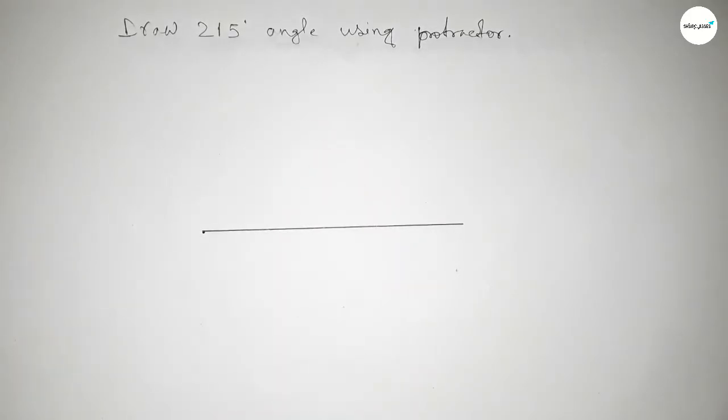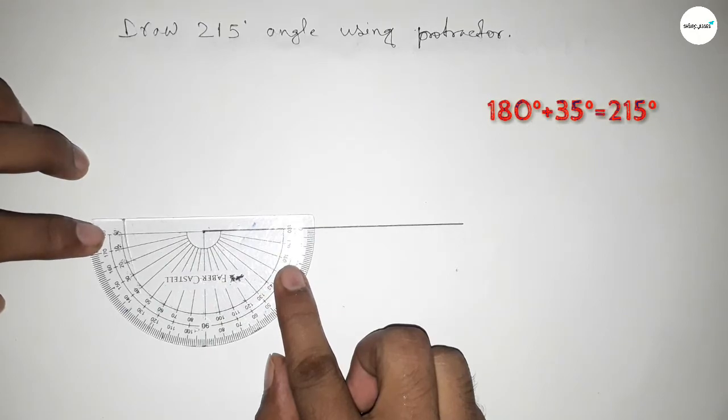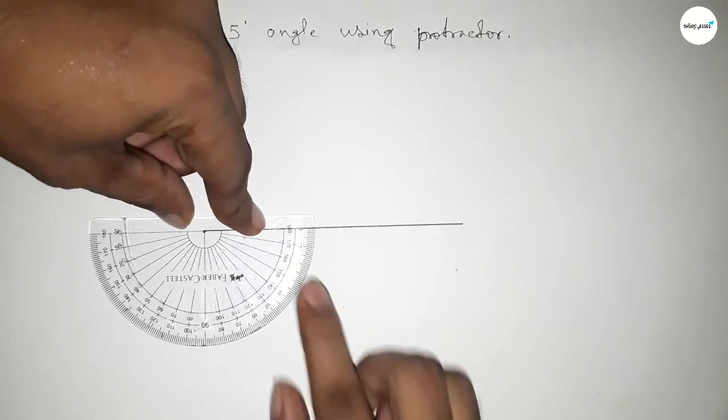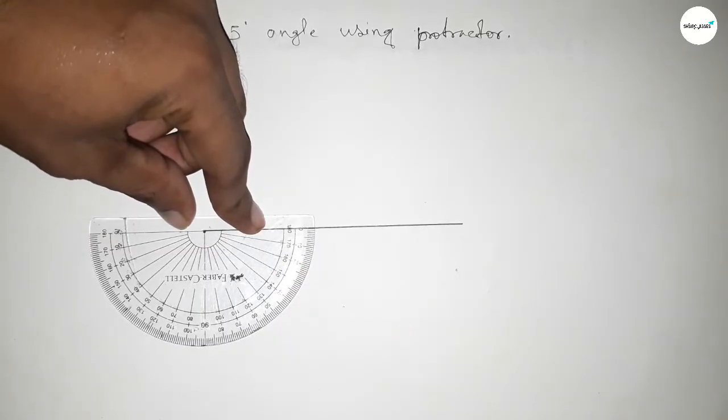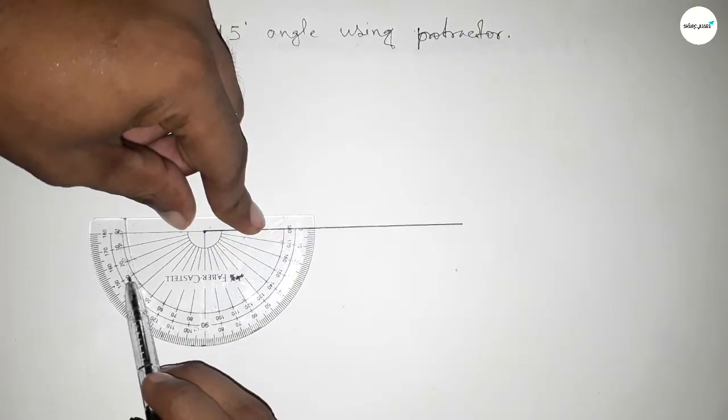If you add extra 35 degree angle with 180 degree, then we can get 215 degree angle. So we have to add extra 35 degree angle. This is 35 degree.